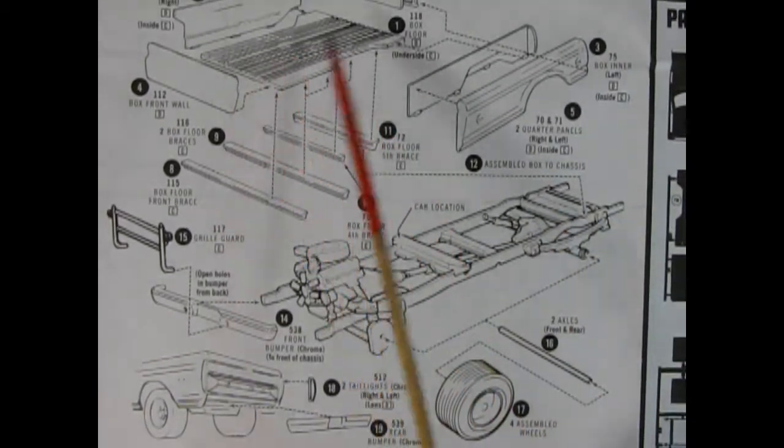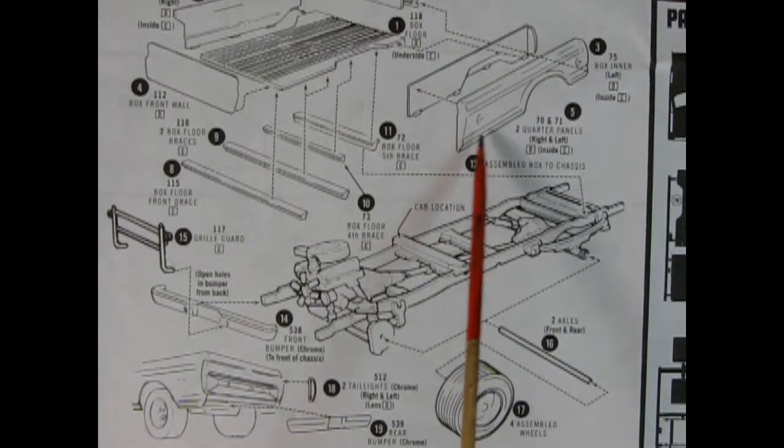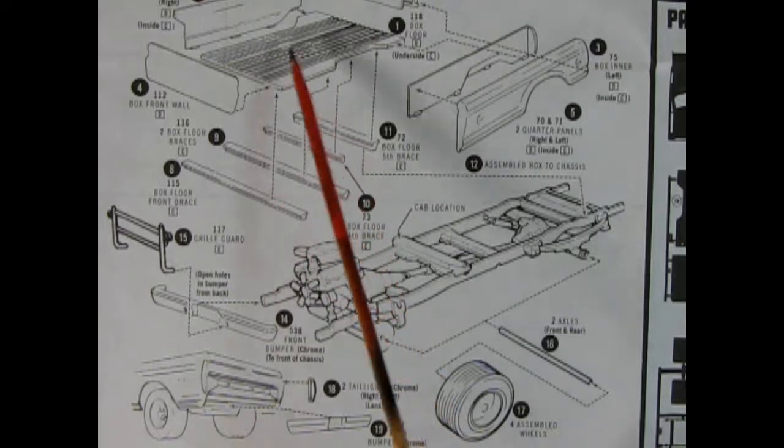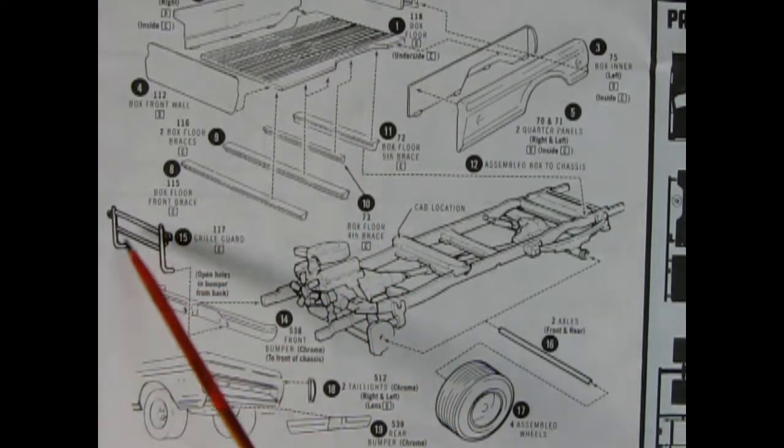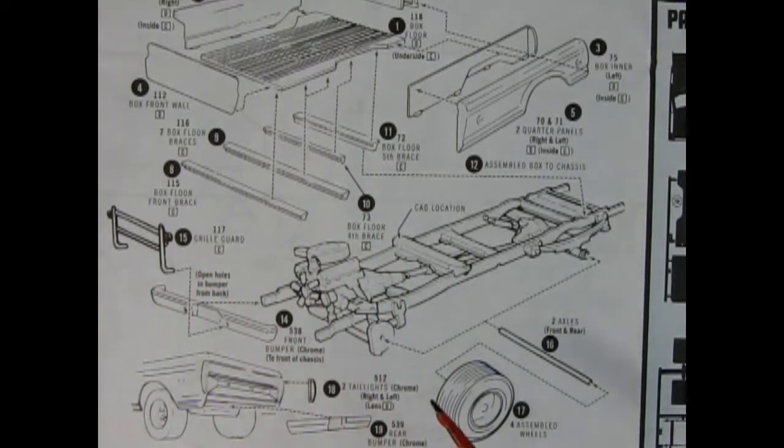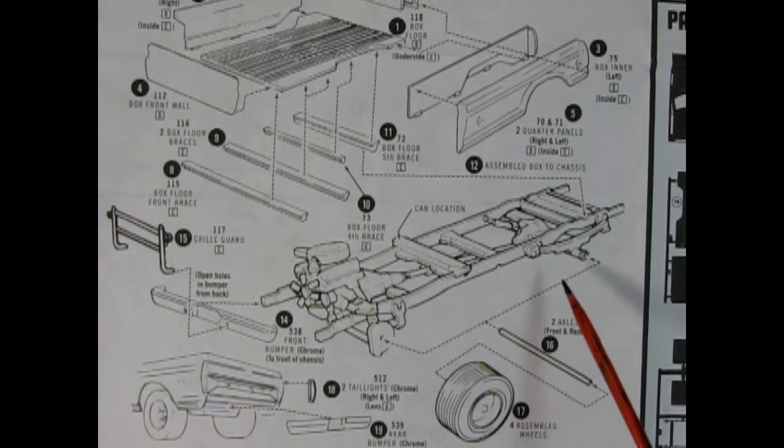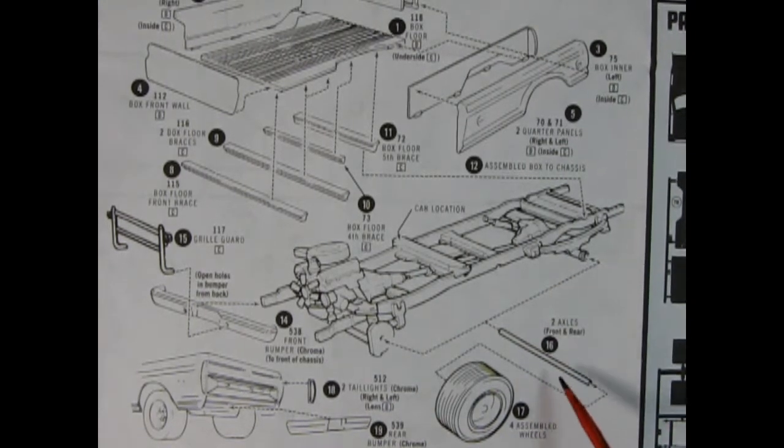There's our pickup bed going together and as you can see is multi-piece with outer and inner panels and then we have all these braces underneath as well as the overrider grille guard, our front bumper, rear taillights, rear bumper going in. All of this drops down onto our frame and then our wheels and axles go through the holes with this metal bar.